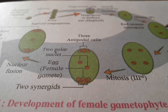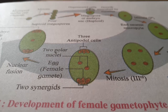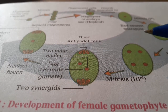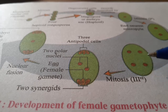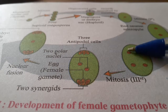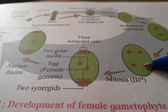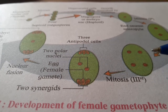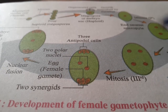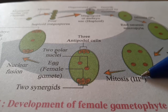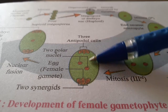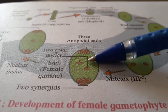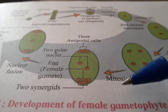It undergoes a 2nd mitotic division and produces a total of 4 haploid nuclei. After the 3rd mitotic division, they produce a total of 8 nuclei.